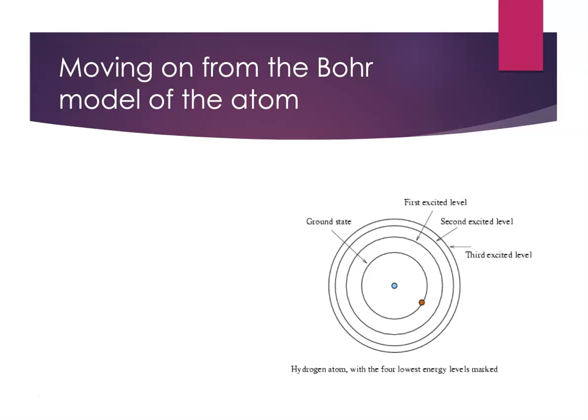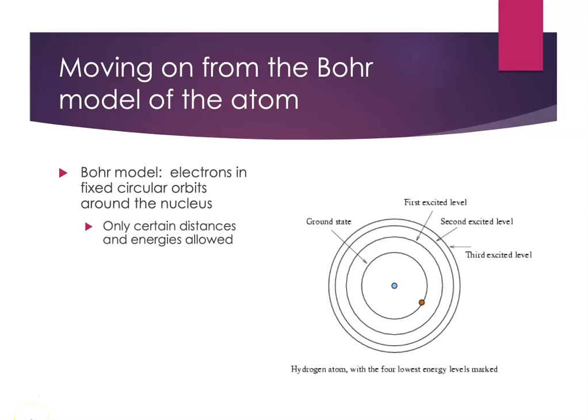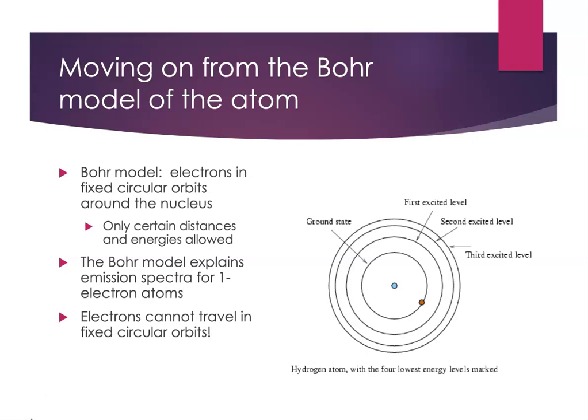We spent a lot of time talking about the Bohr model of the atom, but let's do a quick recap. The Bohr model had electrons moving in fixed circular orbits around the nucleus. Only certain distances from the nucleus were allowed, and these certain distances or orbits had particular energies that were allowed. Other distances and other energies can't happen. It's really good at explaining emission spectra for one-electron atoms. But we also know from classical physics that electrons can't be traveling in fixed circular orbits — they would be emitting electromagnetic radiation and collapsing into the nucleus, and that's not what we see. We do know that atoms are stable.